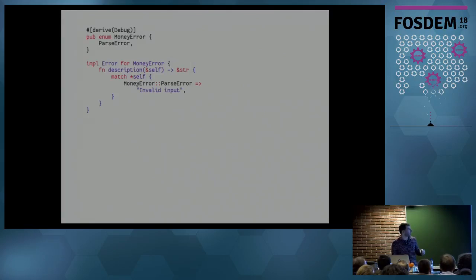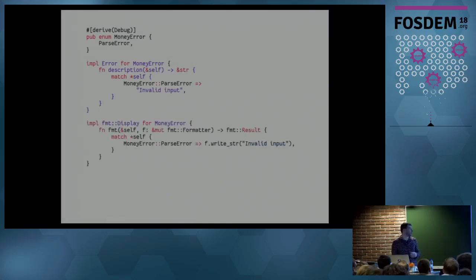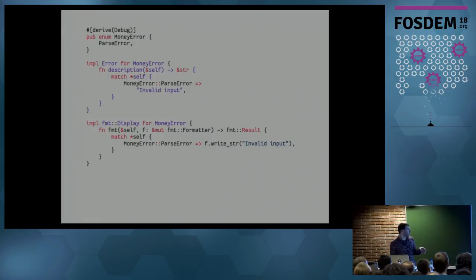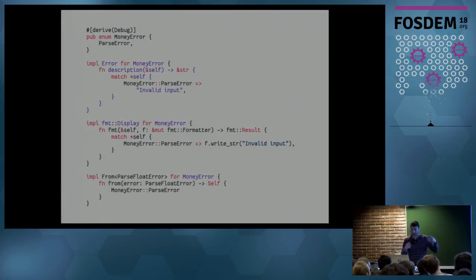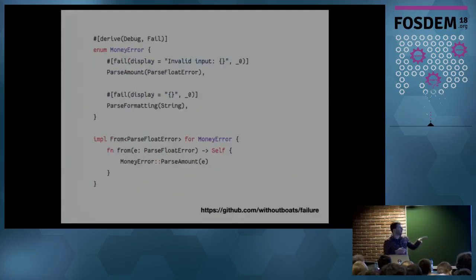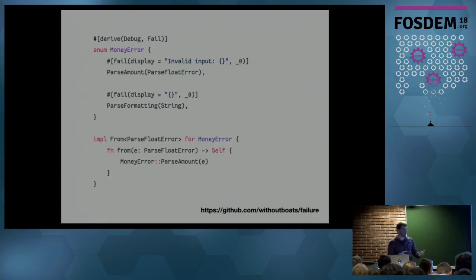That's a lot of boilerplate — Display trait, Error trait, and a From conversion from ParseFloatError to MoneyError so the standard library error gets wrapped into our internal type. There's a library called `failure` that makes this much easier. With it, the same code can be expressed much more concisely, and you can have two separate error variants: ParseAmountError and ParseFormattingError — one for parsing the amount, one for when we don't have two elements. You get beautiful, descriptive error messages: 'expecting amount and currency', or 'parse float error kind invalid'.